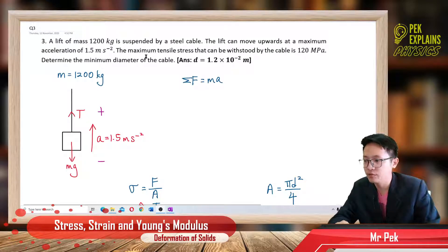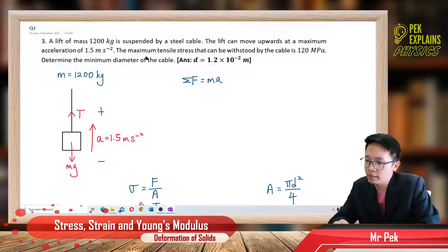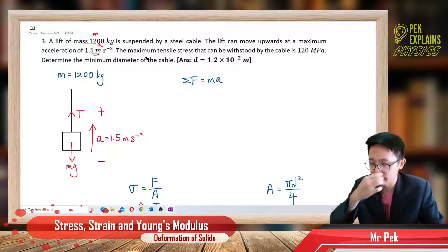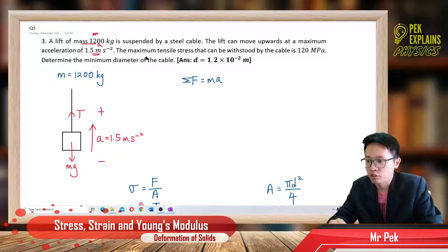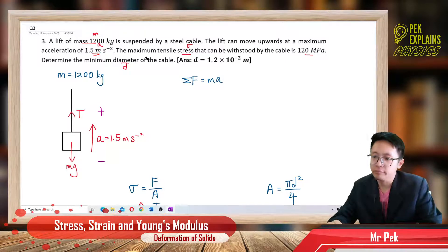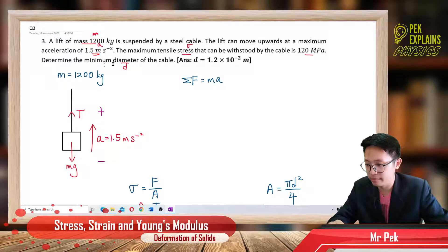So the information given: it asks for the diameter. The mass is given, you have the acceleration — this thing is not in equilibrium, it has acceleration upwards. The stress is 120 megapascals, which you need to change to SI units. And you need to find the diameter, which is stated as minimum.